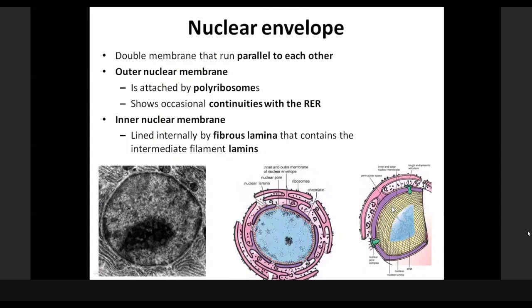The fibrous lamina is important: one, for structural support; and also important for adhesion of chromatins. Some of the chromatins are fixed to this fibrous nuclear lamina, which is basically made by intermediate filaments known as lamins, but other structural proteins are also added. The outer nuclear membrane, as we have said, at intervals becomes continuous with that of the rough endoplasmic reticulum, as indicated here. It also has attached polyribosomes.